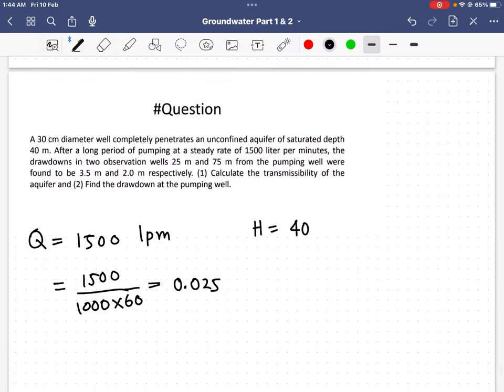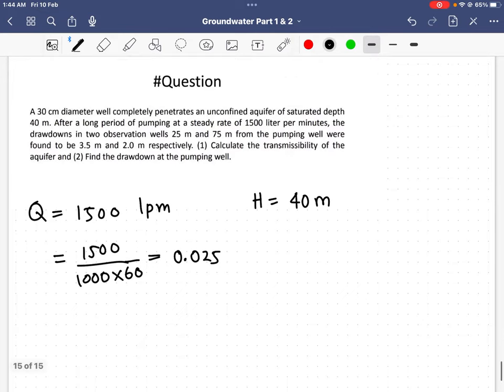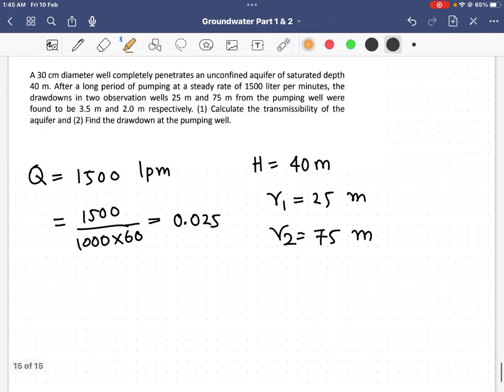Then I have H equal to 40 meters, and the drawdowns in two observation wells at 25 meters and 75 meters. That means r1 equals 25 meters and r2 equals 75 meters.